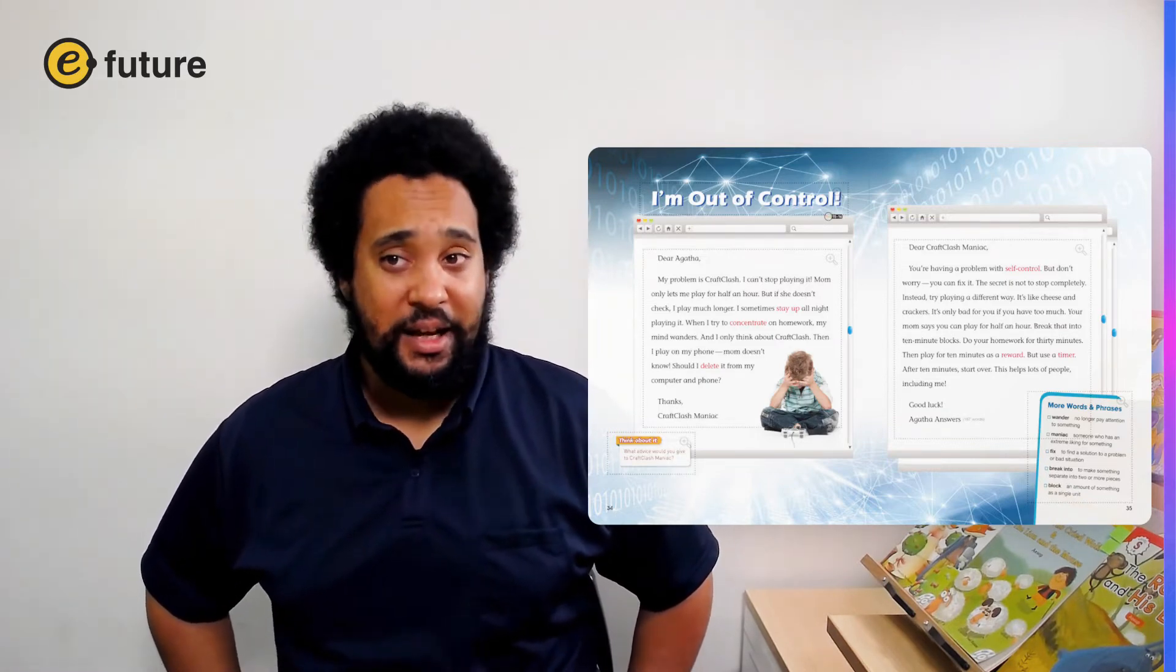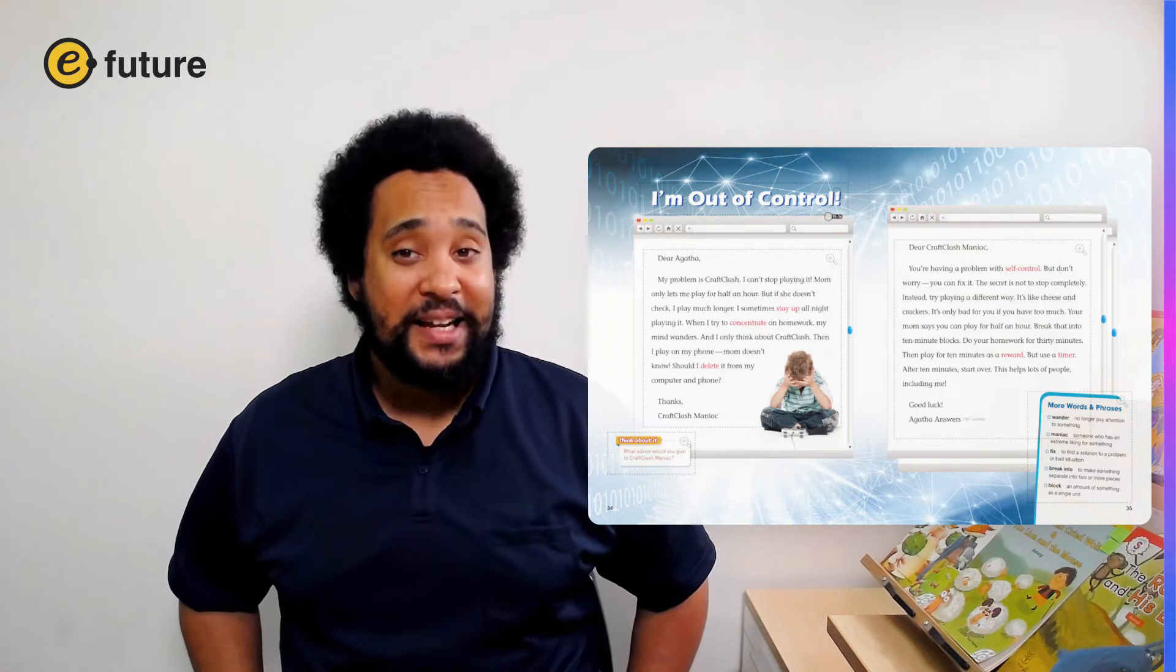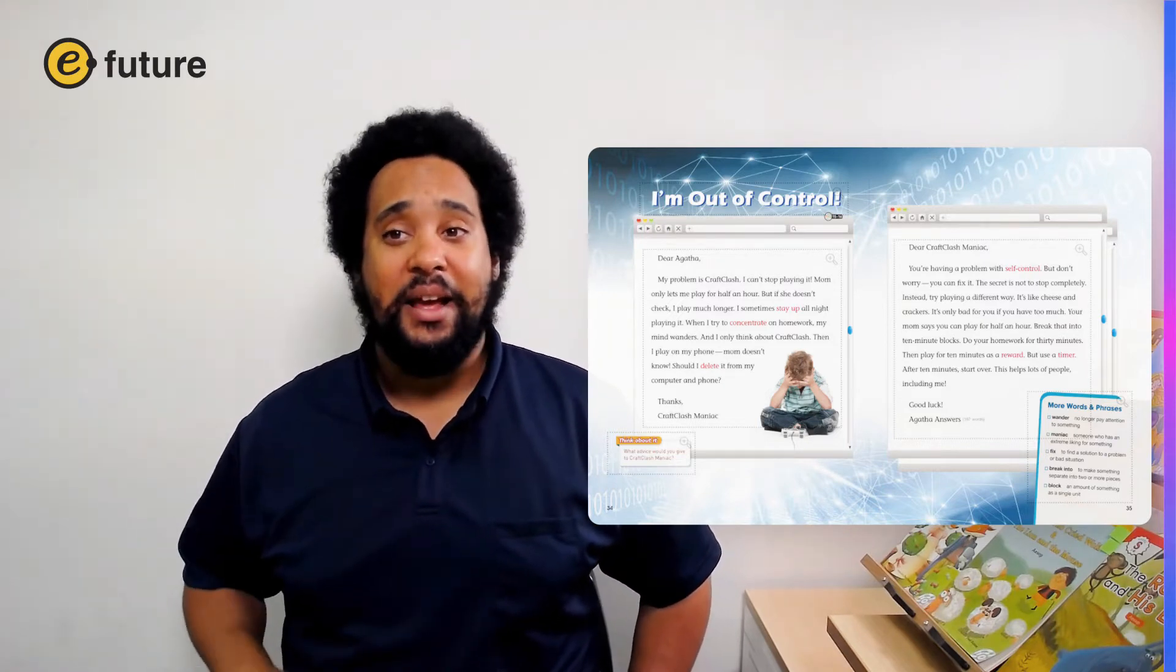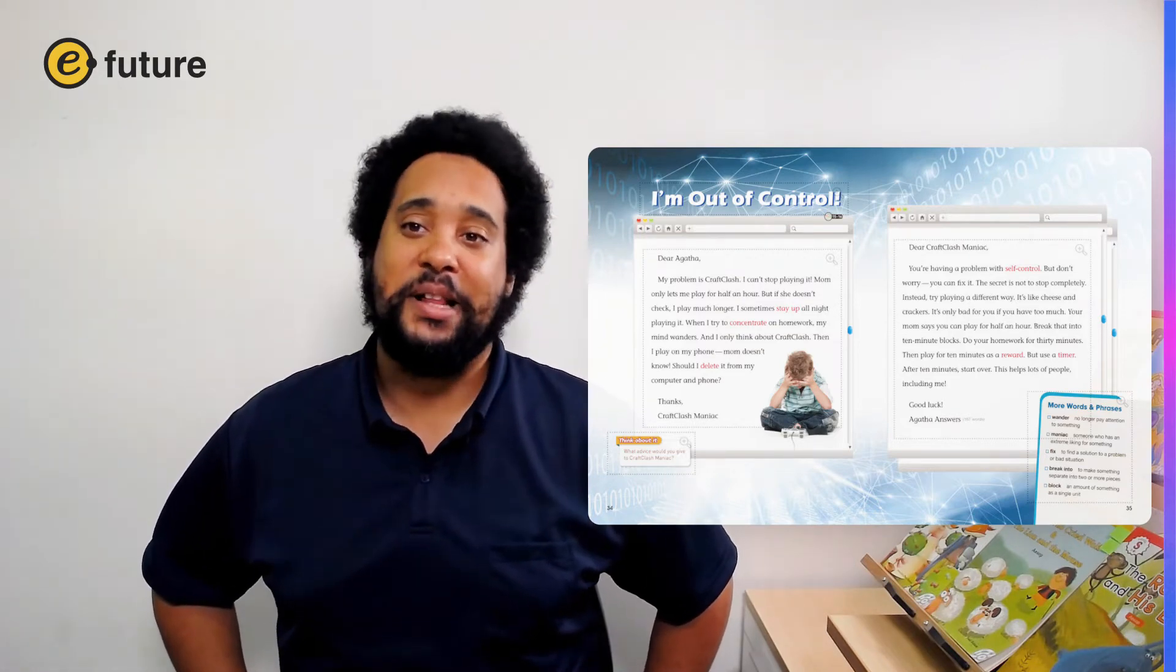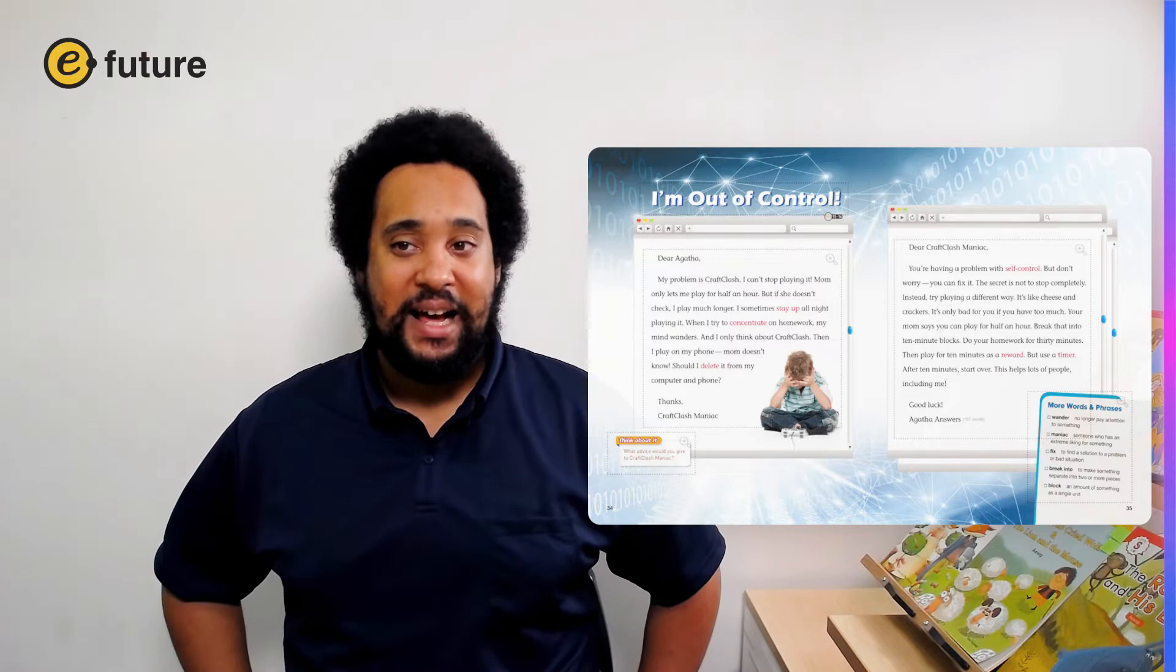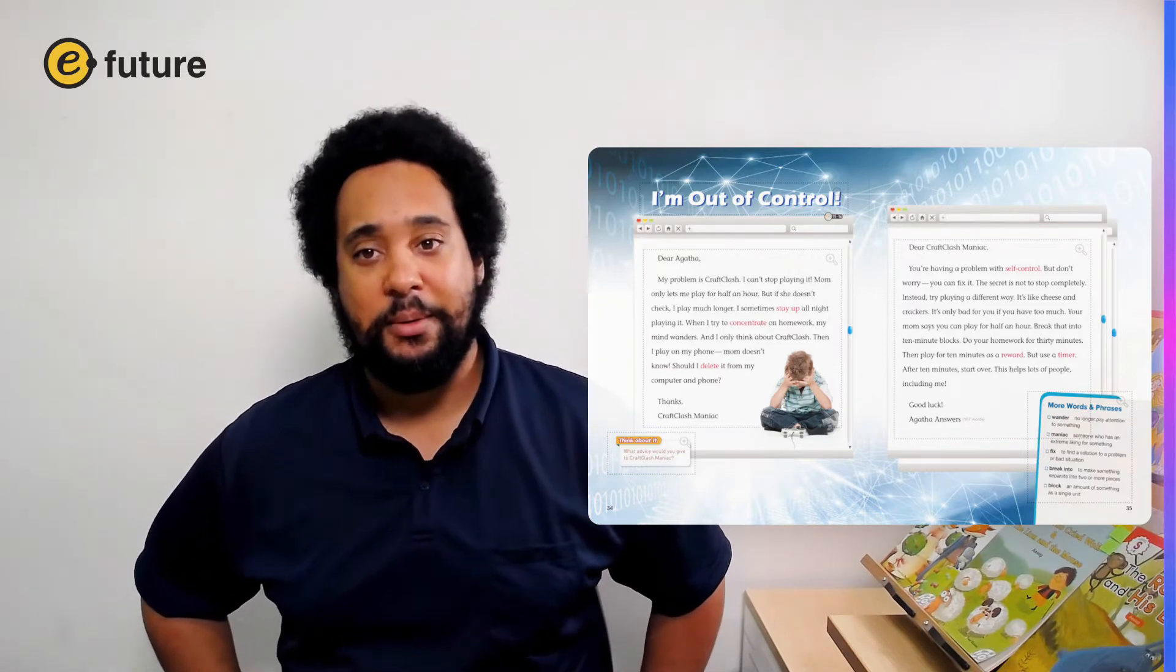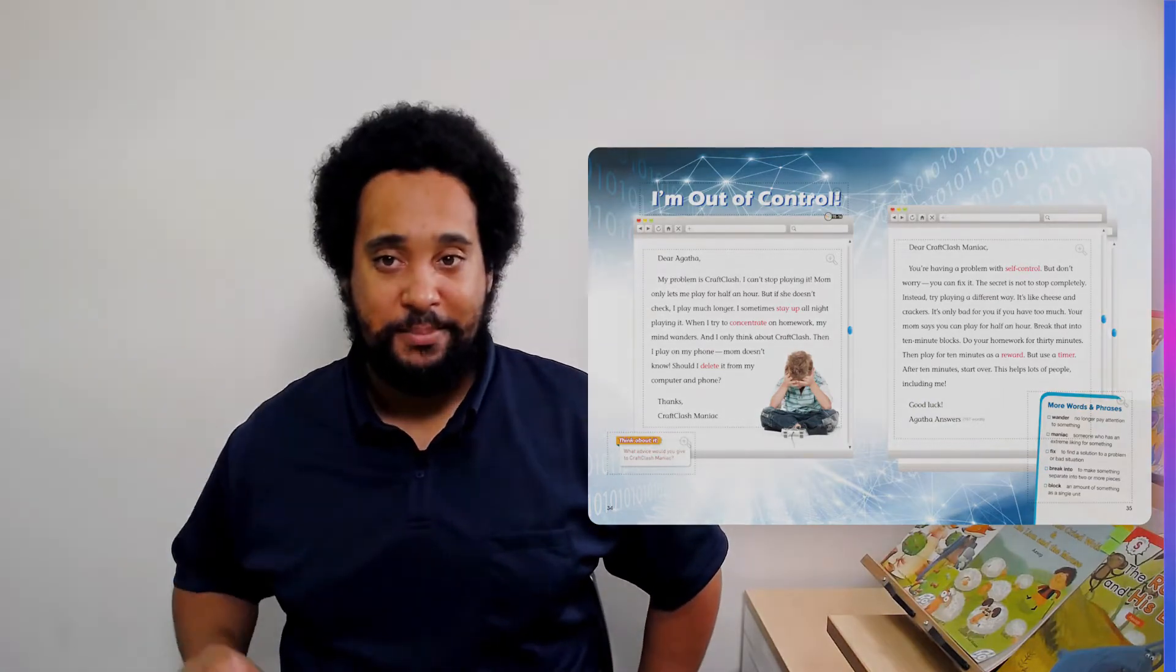So now with a partner, read the story one more time. While you read, I want you to underline two things. First, find and underline craft clash maniac's problems. There may be more than one. Then find and underline Agatha Answers advice to help solve craft clash maniac's problem. Then talk to your partner and decide if Agatha Answers advice is good. Talk about what advice you would give to craft clash maniac. When you're finished, we will share our advice with everybody.